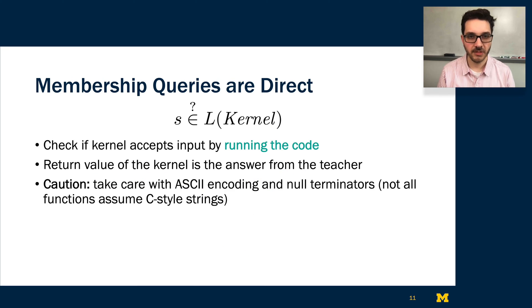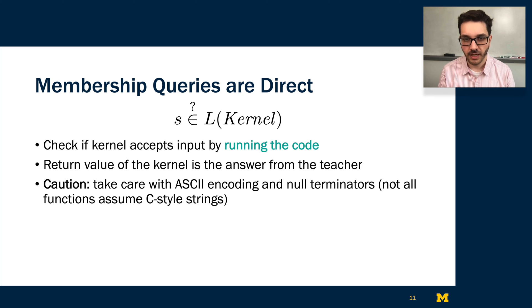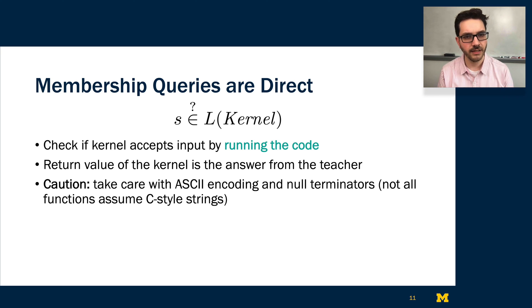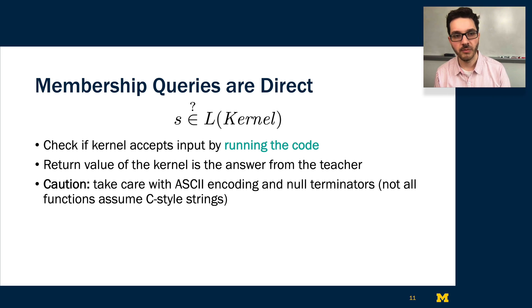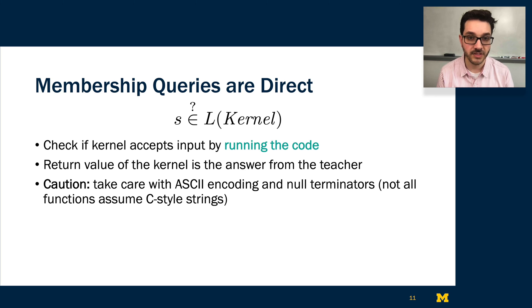To use this in AutomataSynth, we need to implement these two kinds of queries. For membership queries, which are quite direct, we can just run the code and take the return value from the executing function as the answer from our teacher. I want to mention a word of caution: we have to be careful about things like character encoding as well as null terminations, because not all strings and not all functions assume C-style strings. Sometimes there are fixed length strings that allow null characters at any offset within that string.